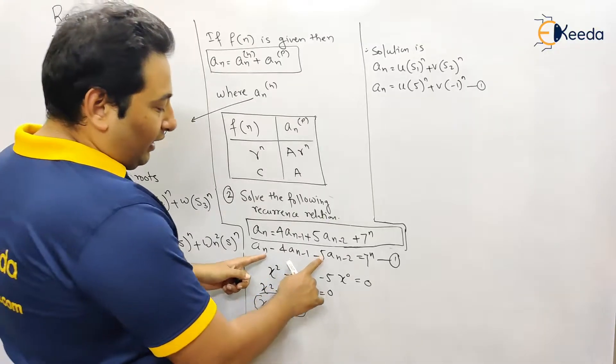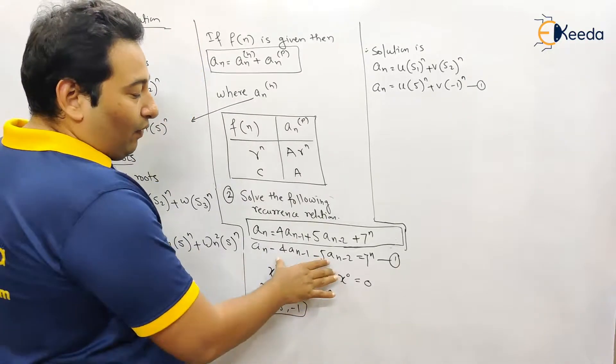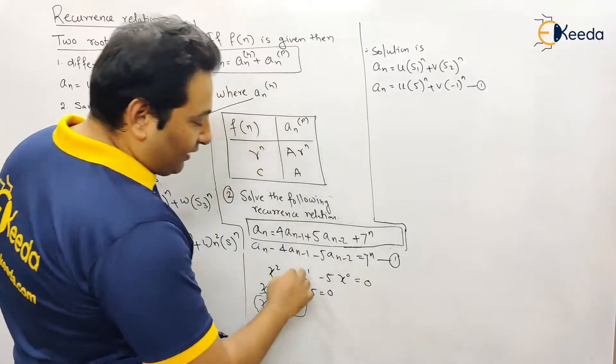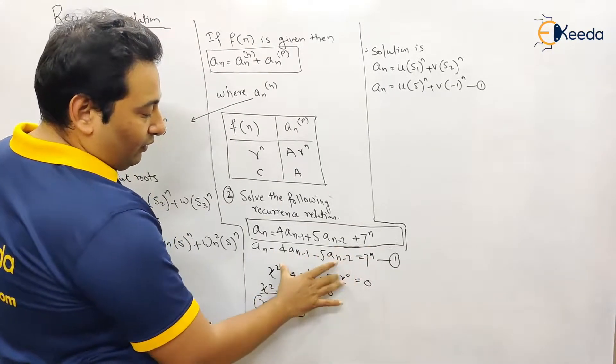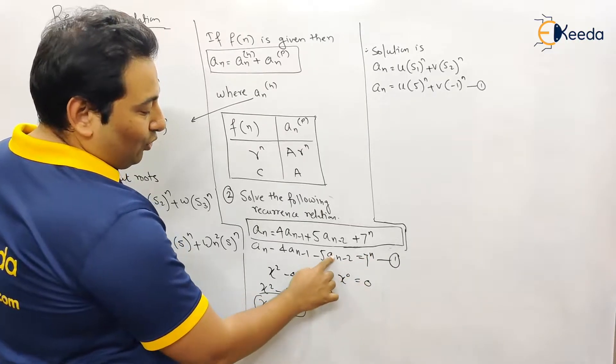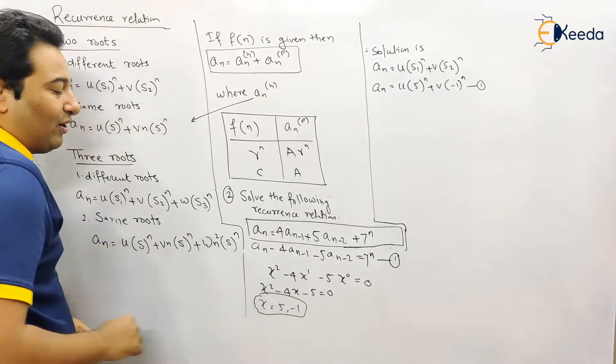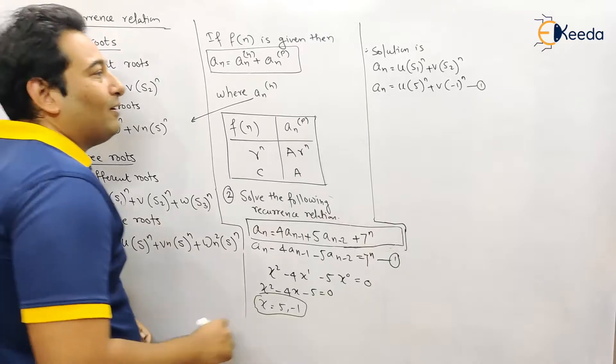And after that convert it into quadratic equation in terms of x. While writing down we're going to take it as zero. We're not going to consider seven raised to n. Just take it as zero and the same procedure will get the values x equal to five and minus one.